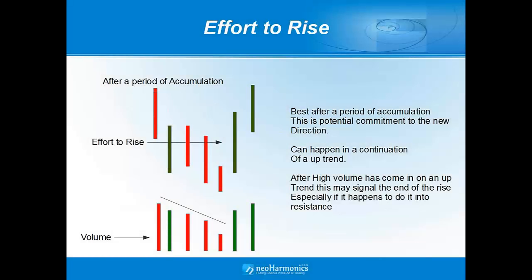Effort to rise happens in three different spots and we're going to cover each of them. It happens during a period after accumulation. In this example, price action is in a downtrend. The effort to rise, based on the breaking of the trend along with price action and above average volume showing a potential commitment to a new direction, could signal a start of a new trend up.